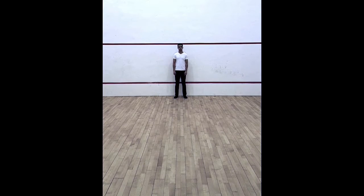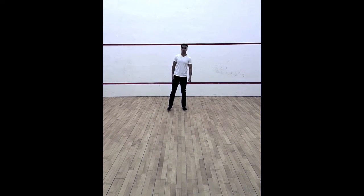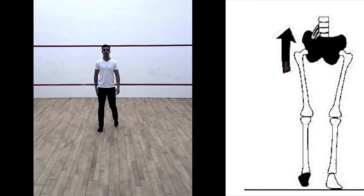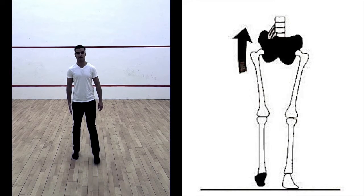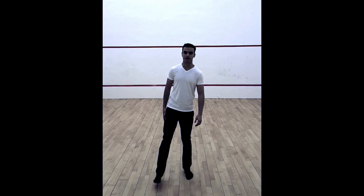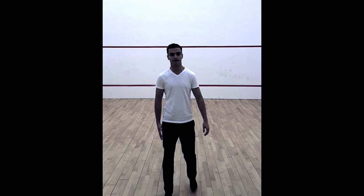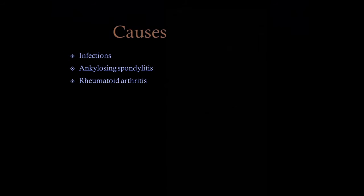In the stiff hip gait, there is an inability to flex the hip when walking. As a result, the patient elevates the pelvis on the affected side in order to clear the ground and propels the leg forward by rotating the pelvis. Stiff hip gait can be caused by infections of the hip such as TB, ankylosing spondylitis, or rheumatoid arthritis.